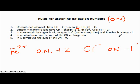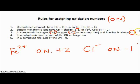The third rule: there are a few elements whose oxidation numbers you can just learn. Hydrogen is always plus one. Oxygen is almost always minus two, unless it's with something more electronegative than itself like fluorine, but that's not very common. Fluorine is always minus one because it's the most electronegative element on the table.